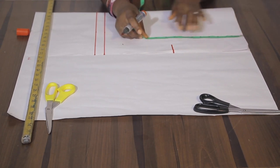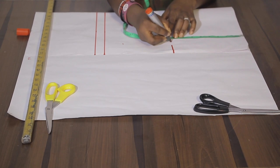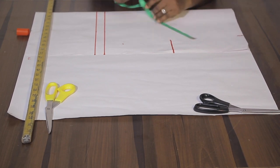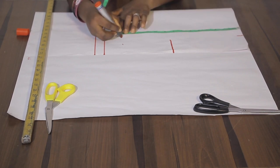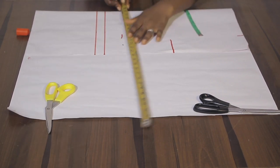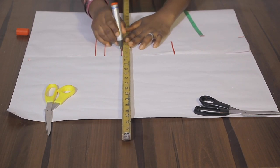And the underbust - first we need to measure down the 8.5 inches for armhole or 9 inches as the case may be. And I also have the underbust length. Here is my underbust length.